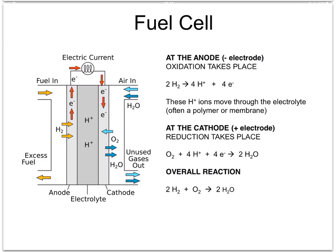Well, this isn't electrolysis. The anode here is negatively charged because that's where the electrons are being produced, and they're flowing from the negative to the positive. The cathode is positive because that's where electrons are being used up.